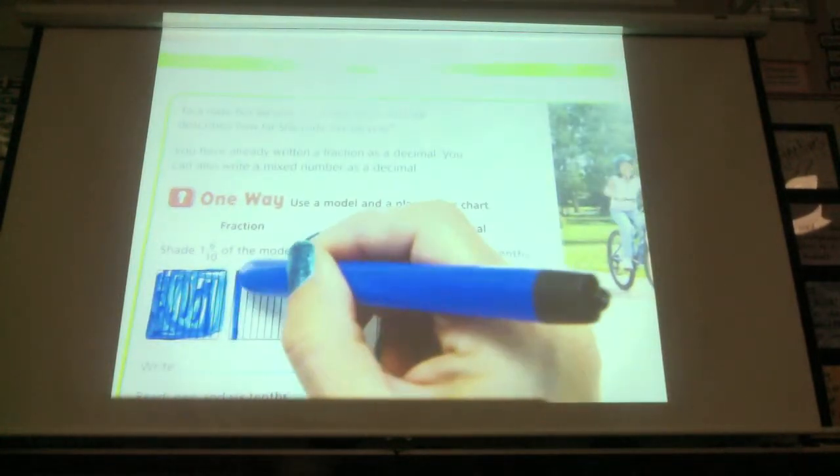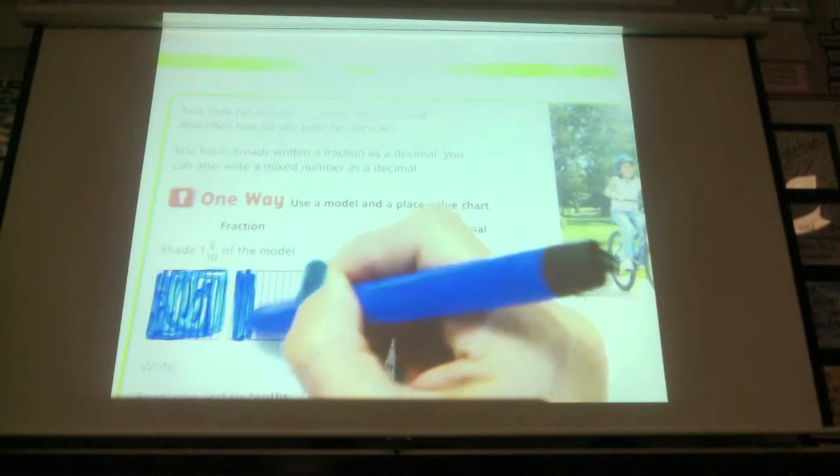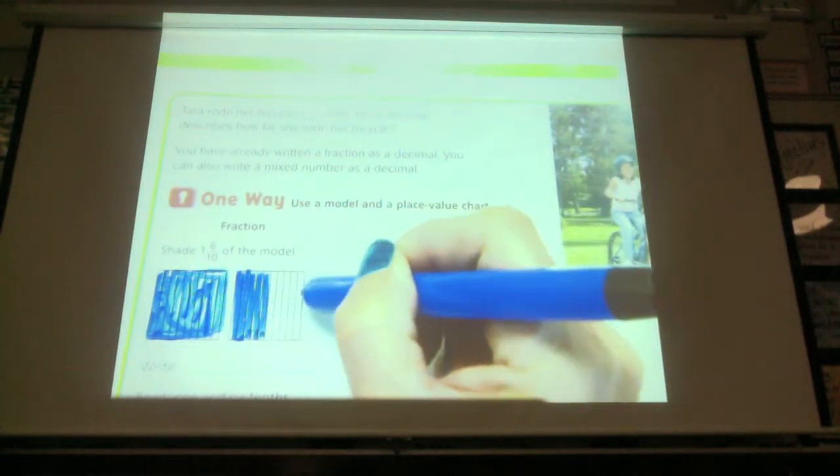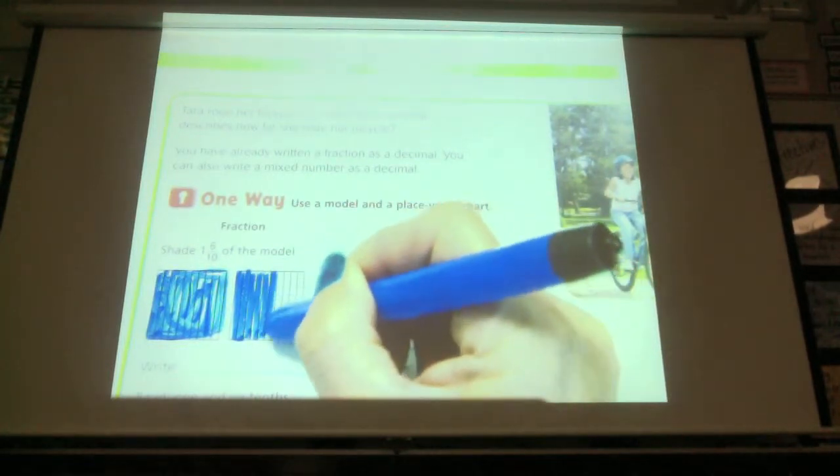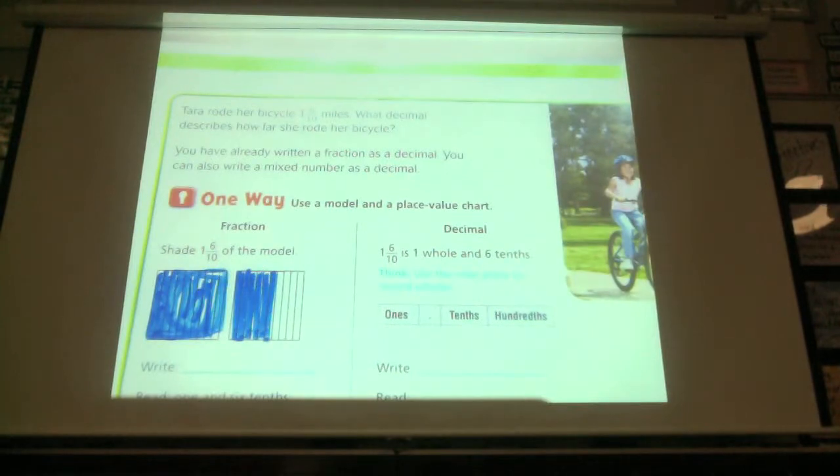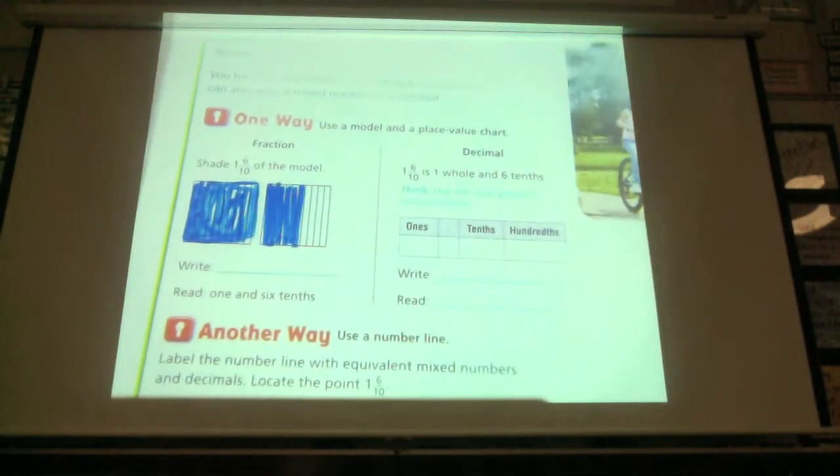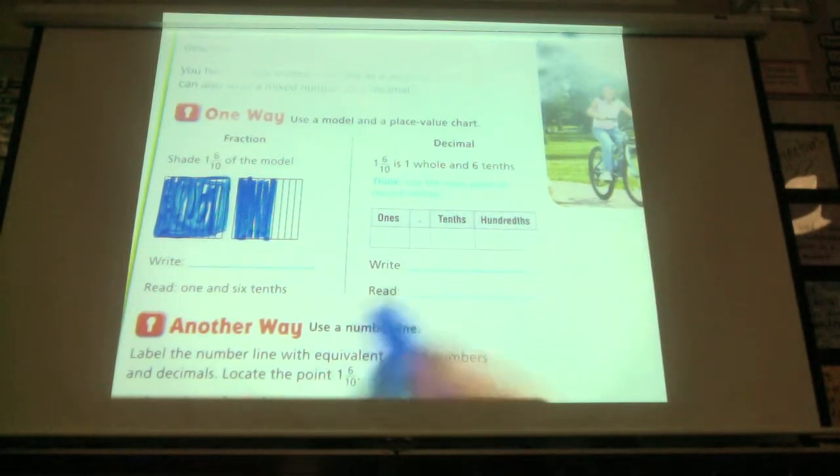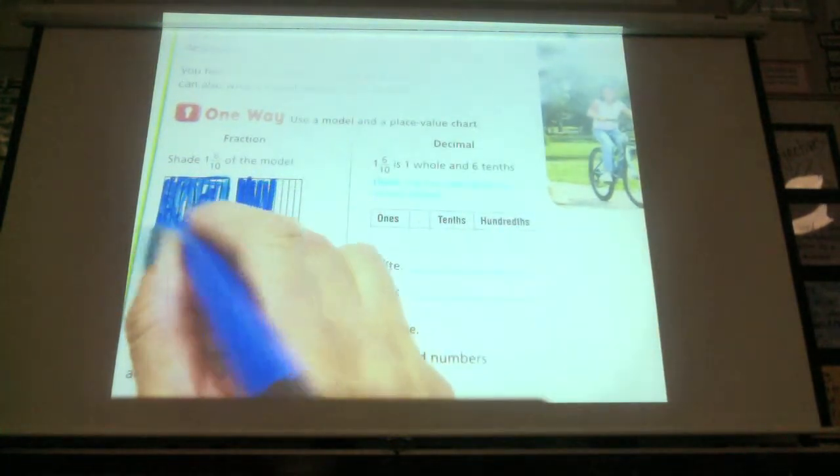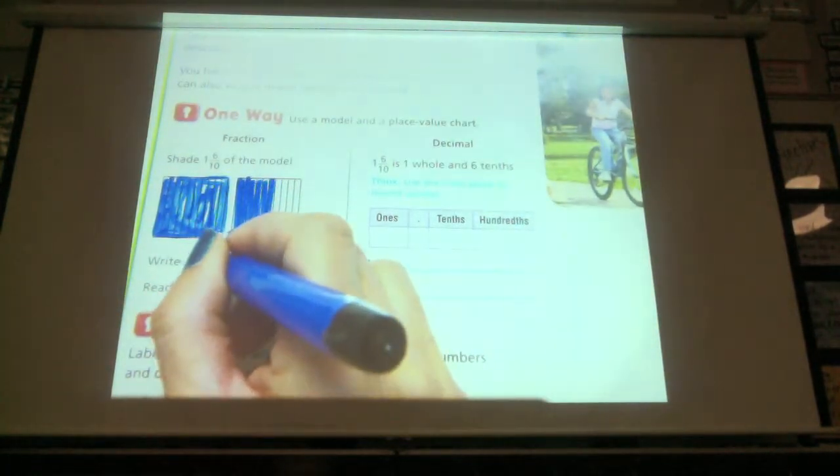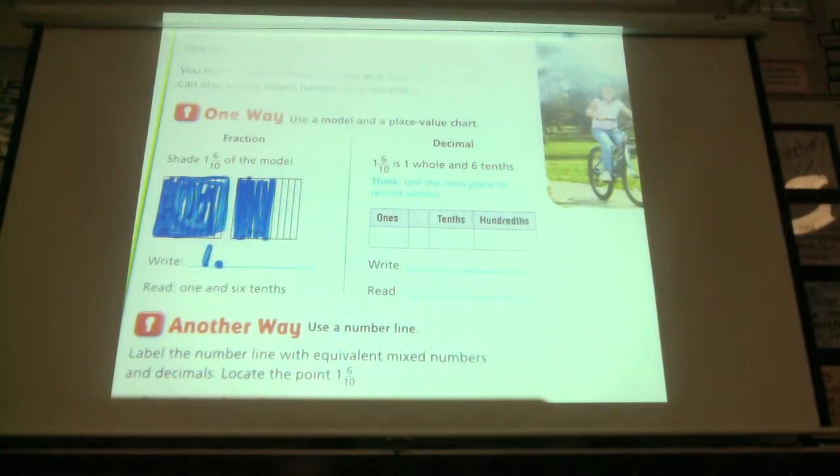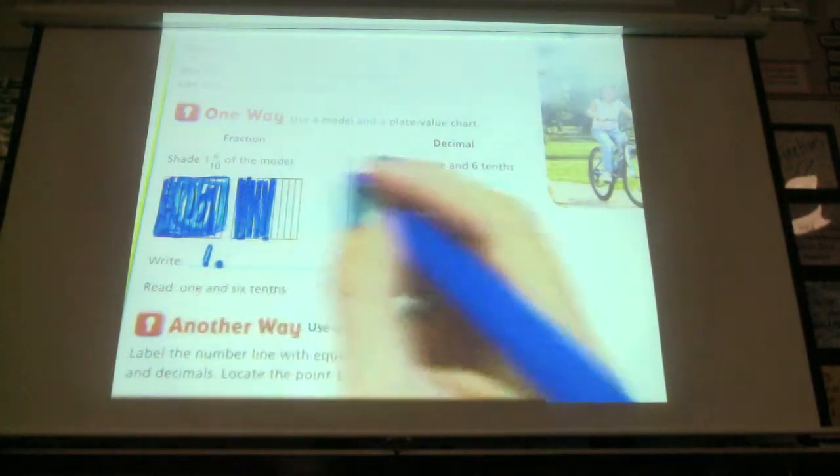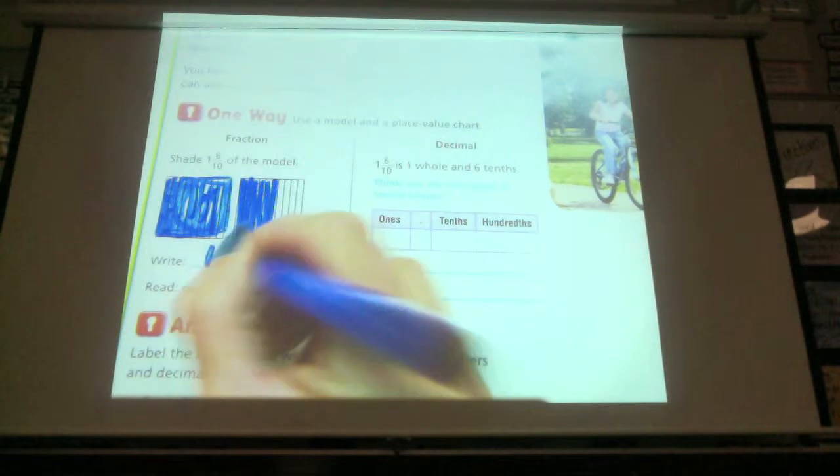And then I have 6 tenths, so I'm going to shade 6 of these. 6 of those. Okay? Now writing it, thinking how we write decimals, we would write on the 1 side, we have 1 whole number, and, I kind of say and when we hit that decimal point, 6 tenths, and 6 tenths goes right there.